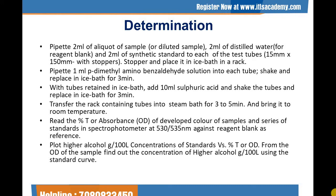For the determination, pipette 2 ml of sample aliquot, 2 ml of distilled water, and 2 ml of synthetic standard into each test tube. Stopper and place in an ice bath in a rack. Pipette 1 ml of paradimethylaminobenzaldehyde reagent into each test tube and place in the ice bath for 3 minutes. With tubes retained in the ice bath, add 10 ml of sulfuric acid, shake the tubes, and replace in the ice bath for 3 minutes. Transfer the rack of tubes into a steam bath for 3–5 minutes and bring to room temperature.